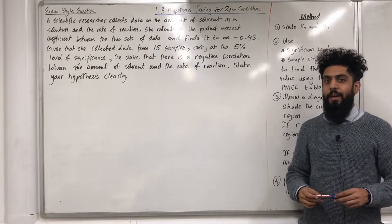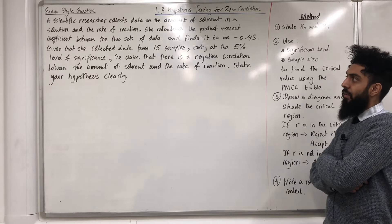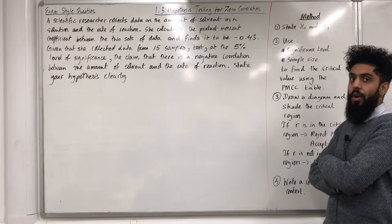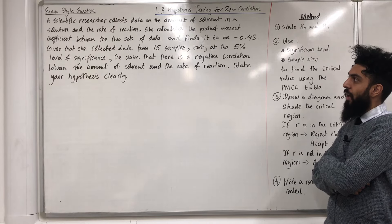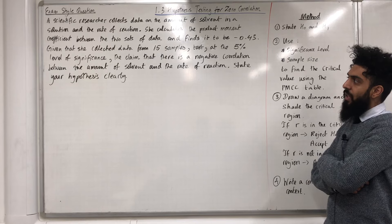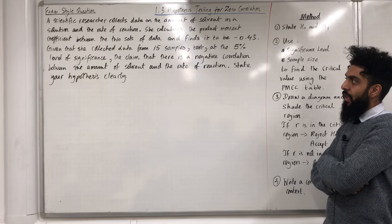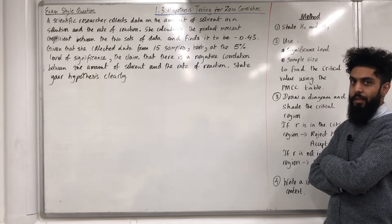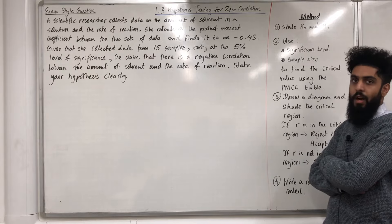Here is another exam style question. A scientific researcher collects data on the amount of solvent in a solution and the rate of reaction. She calculates the product moment correlation coefficient between the two sets of data and finds it to be minus 0.43. Given that she collected data from 15 samples, test at the 5% level of significance the claim that there is a negative correlation between the amount of solvent and the rate of reaction. State your hypotheses clearly. I'm going to be extracting some key information from this question.